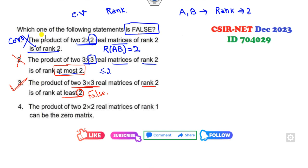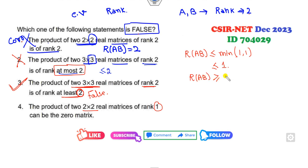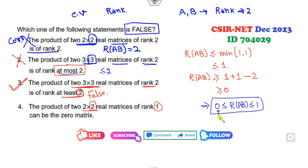Since it is Part B, we can discard the fourth option as well. But verifying: for two 3×3 matrices of rank 1 each, rank(AB) ≤ min(1,1) = 1. By Sylvester: rank(AB) ≥ 1+1−3 = −1, so rank(AB) ≥ 0. Therefore rank(AB) can be 0. The fourth option claiming rank is 1 can be false since rank 0 is possible. So option C remains the correct answer.